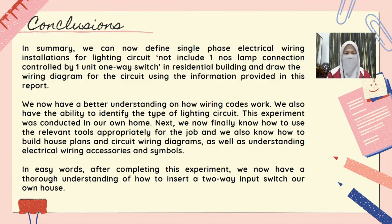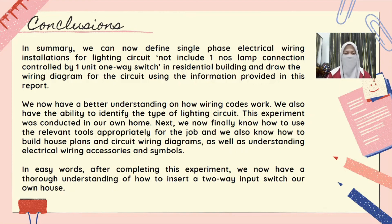Hi, Assalamualaikum. My name is Nondani Binti Mama Israeli, matrix number E190111. To summarize, we can now define single-phase electrical wiring installation for a lighting circuit, including a one-way switch connection controlled by a one-way switch in a residential building. We also drew the wiring diagram for the circuit using the information provided in this report, and now have a better understanding of how wiring codes work. We are also able to identify the types of lighting circuits, and the experiment was conducted in our own homes.